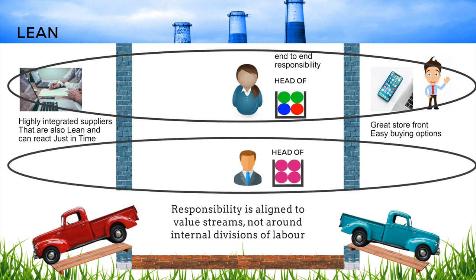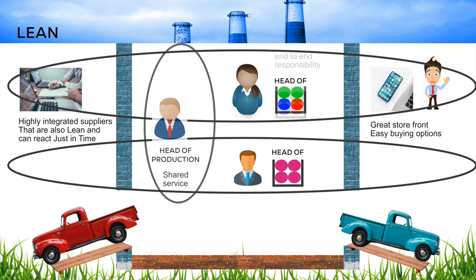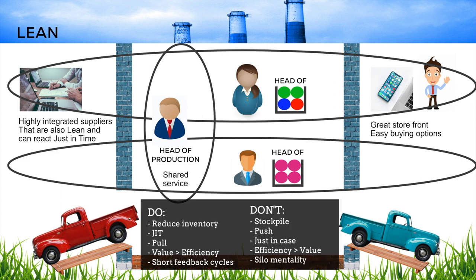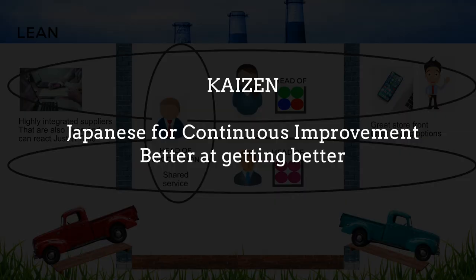You might have a head of one product accountable for everything related to it end to end — sales, client management, production, and supplier management — and similarly a head of another product. There could still be a head of production, but this function is now about offering a flexible production capability serving the diverse and ever-changing needs of the product heads, rather than being an internally focused, efficiency-only driven job. You do this with more configurable equipment but, more importantly, with a new mindset, a new understanding, and a new culture — a value-driven culture. Silo mentality is much less likely to appear when accountability is horizontal, following the value stream and facing the clients. Short feedback cycles are everywhere, demand is pulled not pushed, waste is reduced, and the company is not only better today but better at learning and adapting — better at getting better. This is the power of Lean.